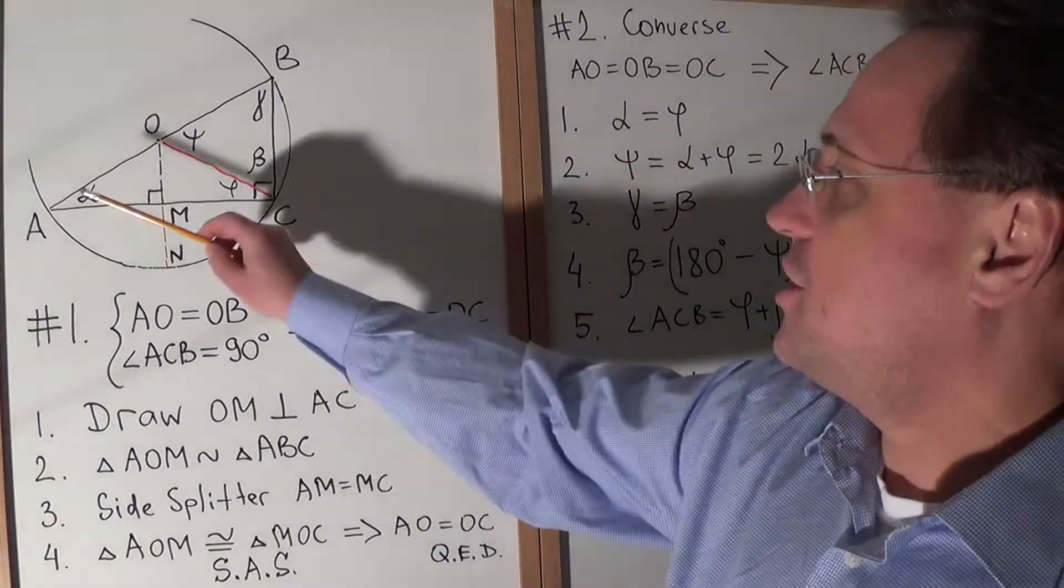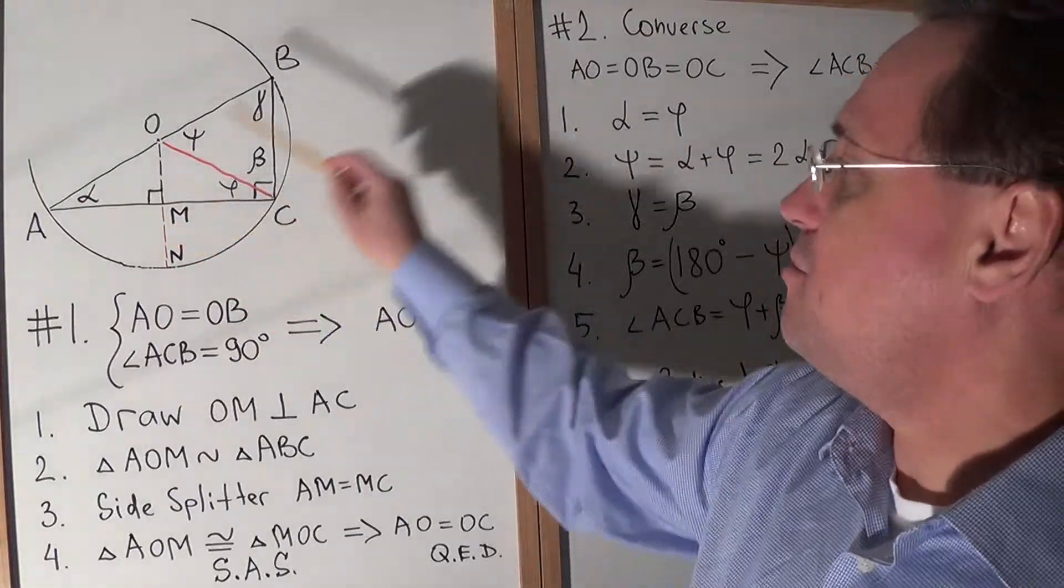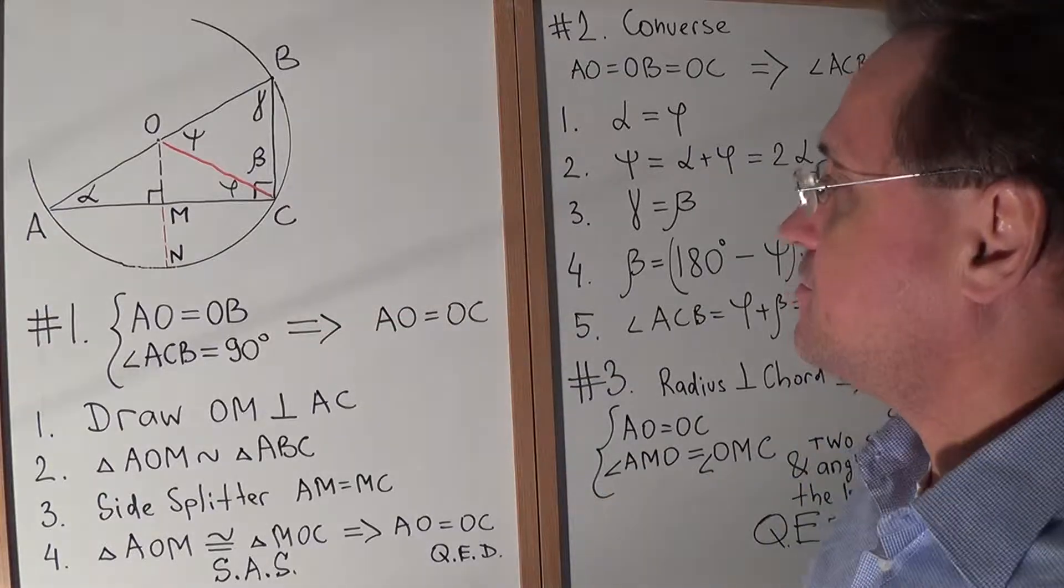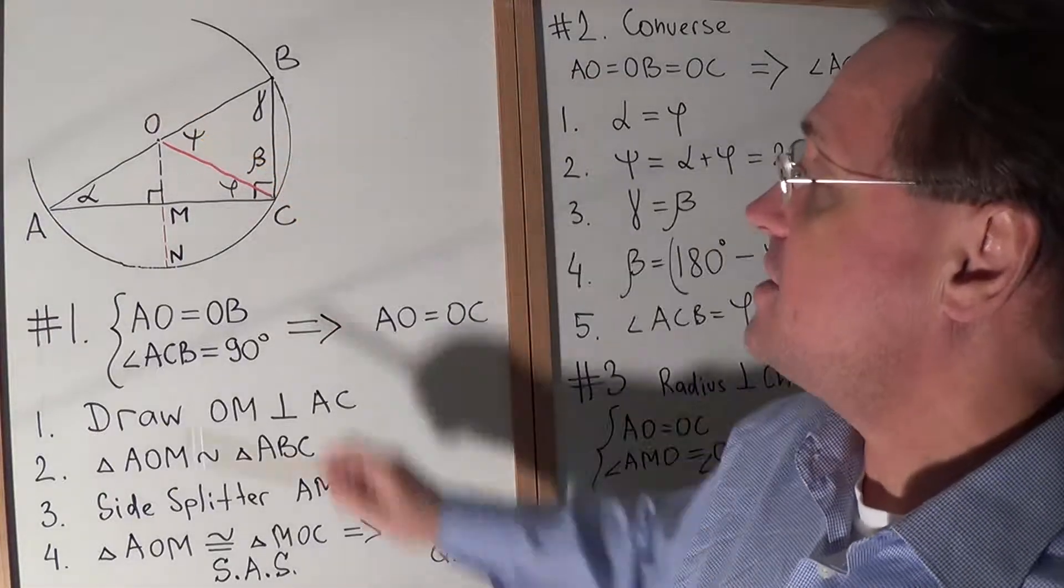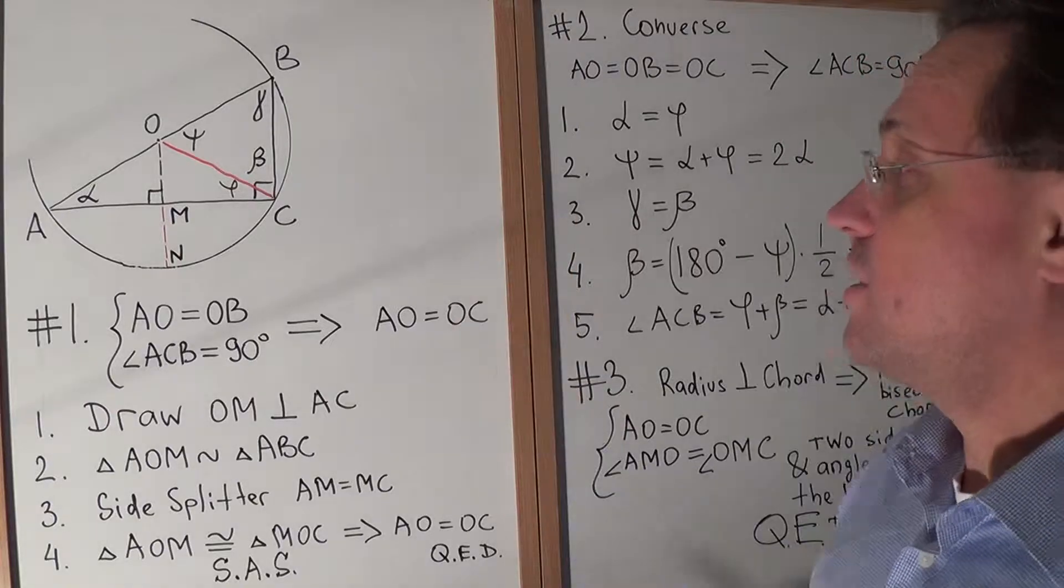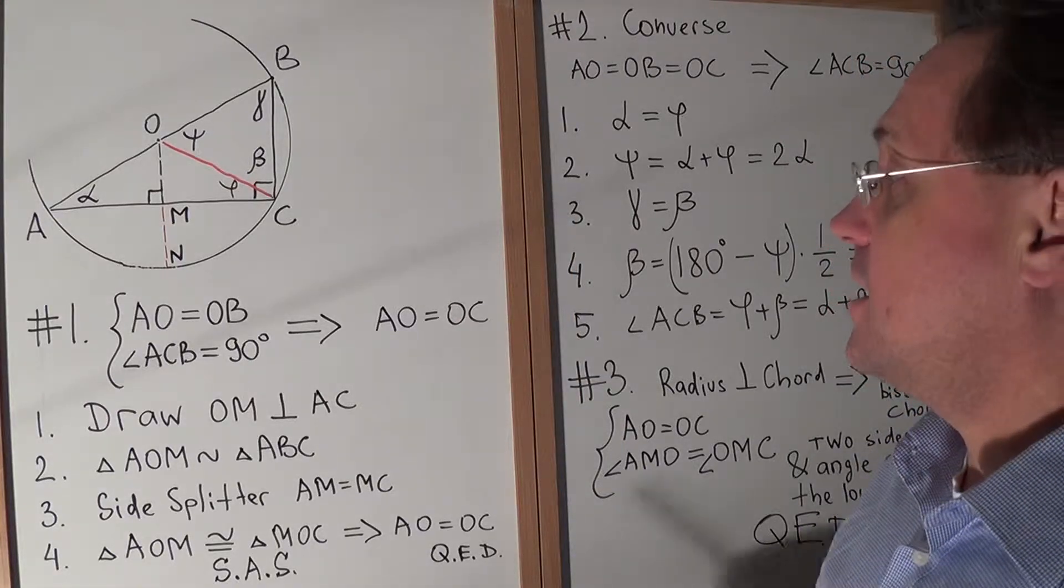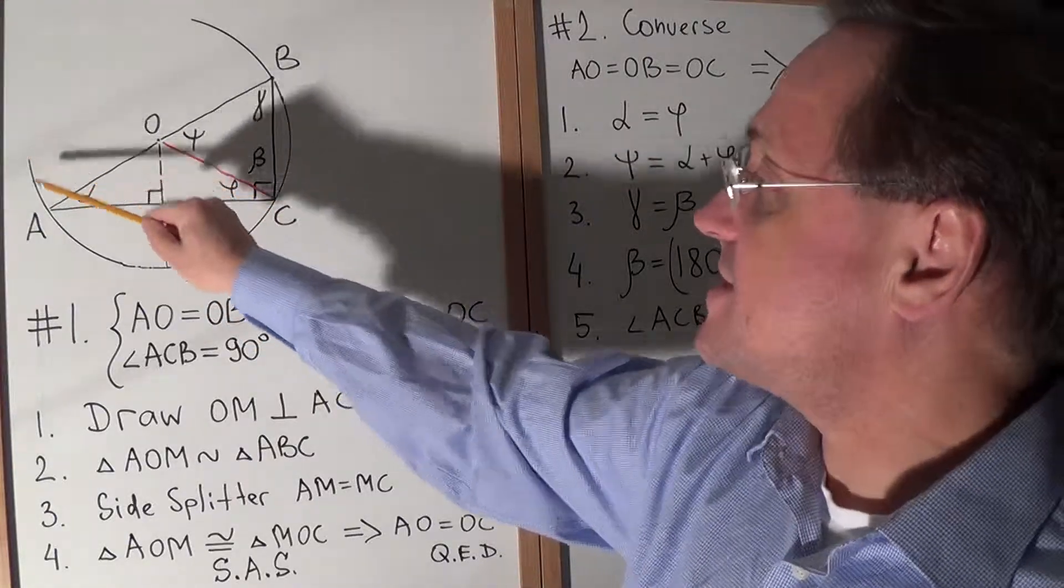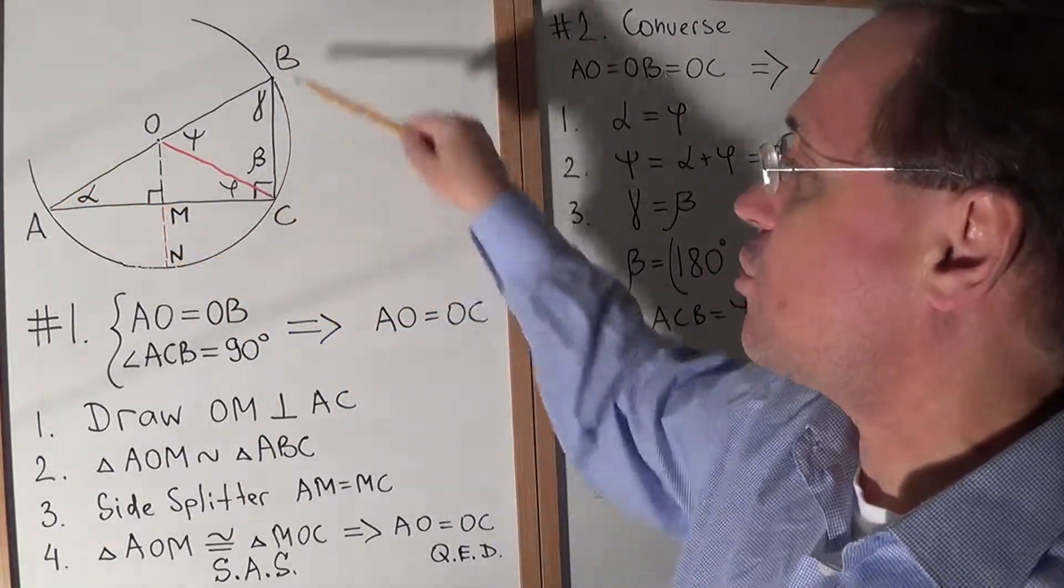Theorem: Given right triangle ABC, right angle C, point O is the middle of hypotenuse. Prove that point O is the center of circumscribed circle.